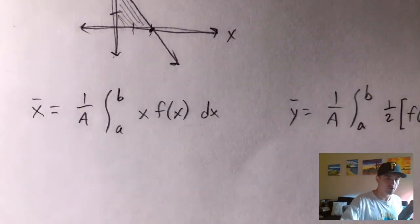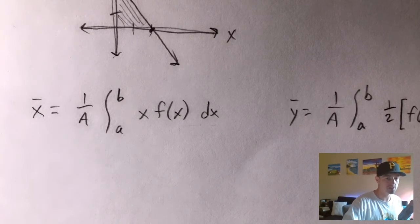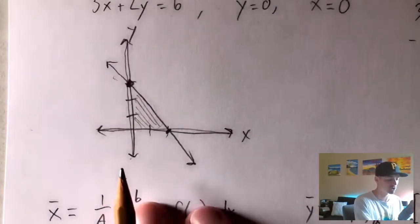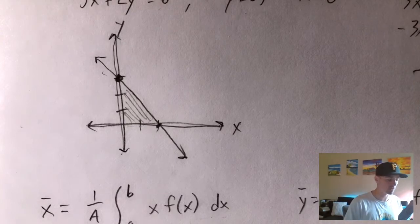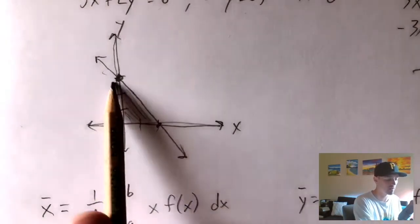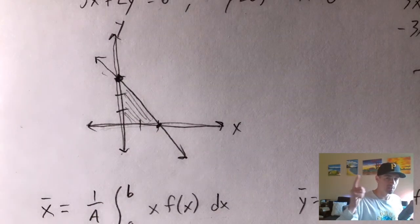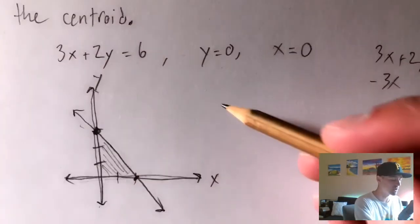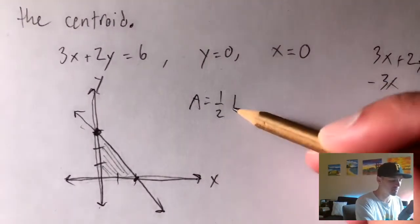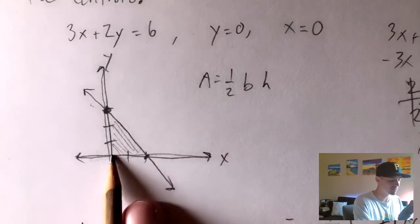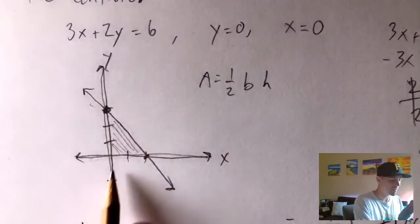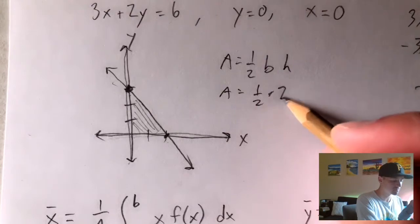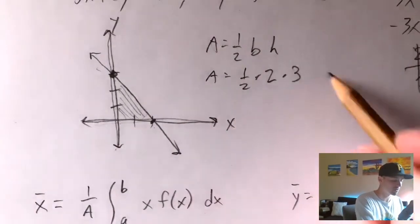The first thing to figure out when applying these equations is the area of the region. In this case we have a triangle, and the area of a triangle is one half times base times height. The height of our triangle is 3 units and the base is 2 units wide. So we plug in 2 for the base and 3 for the height, giving us an area of 3. So capital A equals 3 in these equations.